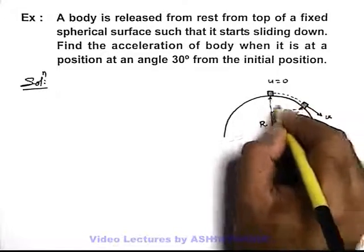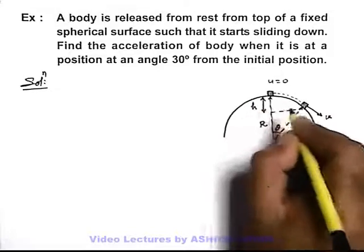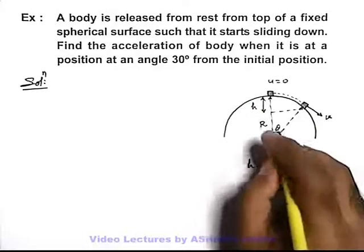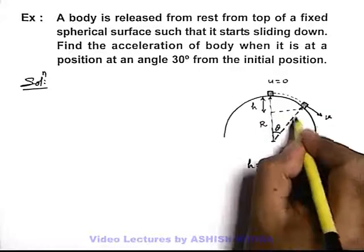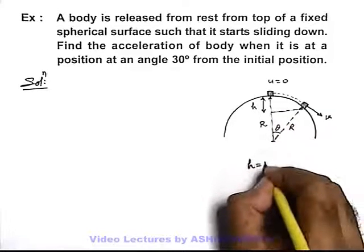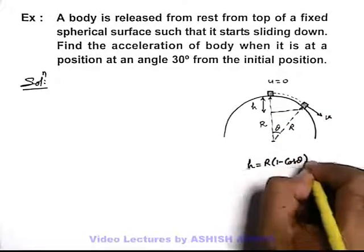from initial to this position, the body falls by a distance h. And the value of h we can simply write as r minus r cos theta, so in this situation it will be r times (1 - cos theta).